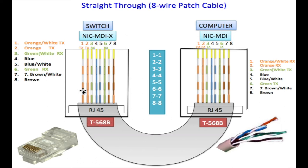This is a straight-through configuration, and on the other side we have the same T-568B configuration. Having the same type on both ends is how we make a straight-through cable — orange-white, orange, green-white, blue, blue-white, green, brown-white, brown, just like the other end. This is a straight-through cable.